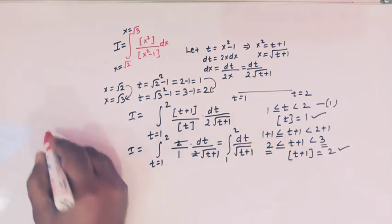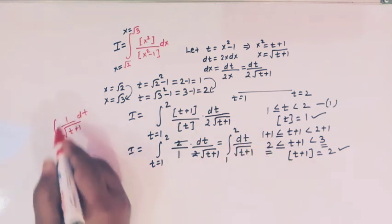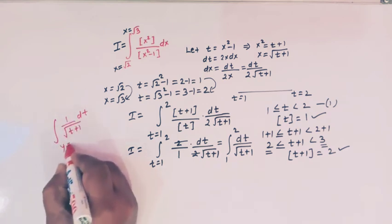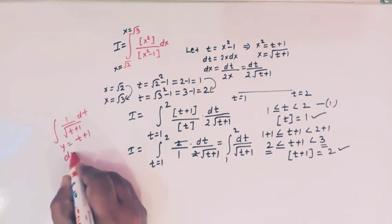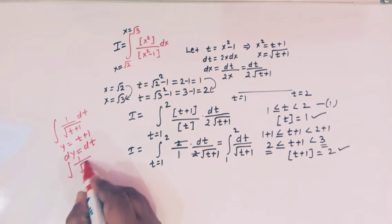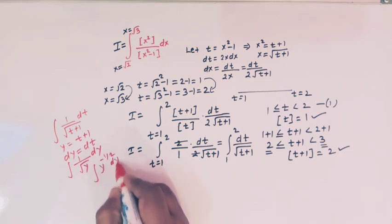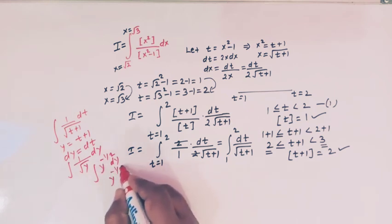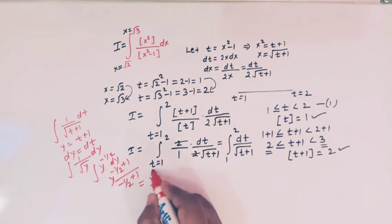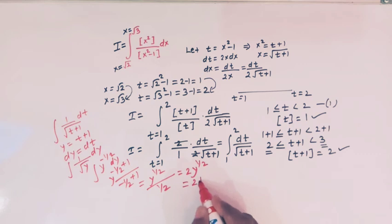Now we find the indefinite integral of 1 over square root of t plus 1. Let y equal t plus 1, so dy equals dt. The integral becomes 1 over square root of y dy, which is y to the minus half dy. Integrating, we get y to the half divided by half, which equals 2 times square root of y, that is 2 times square root of t plus 1.